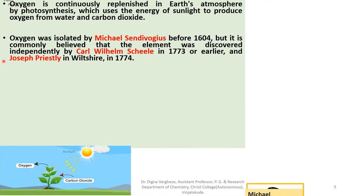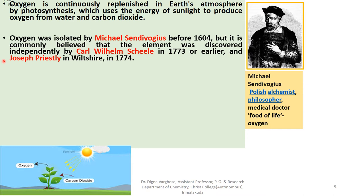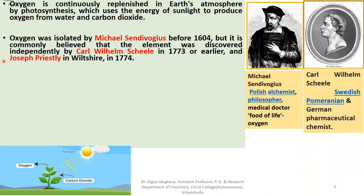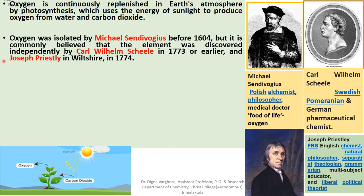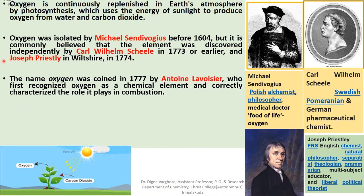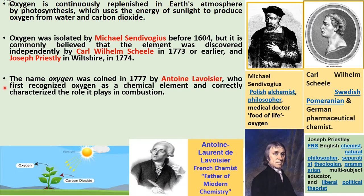Oxygen was isolated by Michael Sendivogius before 1604, but it is commonly believed that the element was discovered independently by Carl Wilhelm Scheele in 1773 or earlier, and Joseph Priestley in Wiltshire in 1774. The name Oxygen was coined in 1777 by Antoine Lavoisier. Michael Sendivogius was a Polish alchemist, philosopher, and medical doctor who named oxygen 'food of life.'